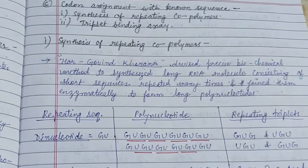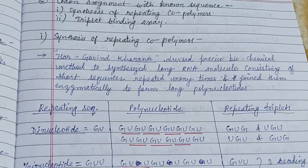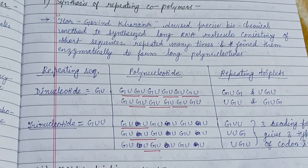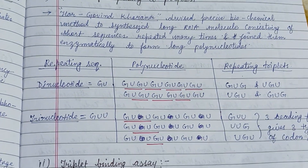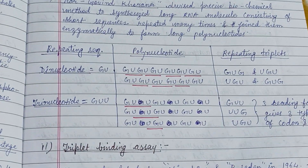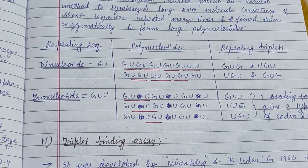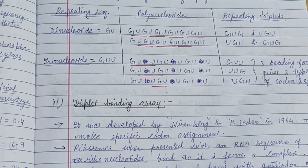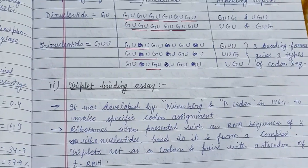Har Gobind Khorana devised precise biochemical methods to synthesize long RNA molecules consisting of a short sequence repeated many times, and joined them enzymatically to form long polynucleotides.